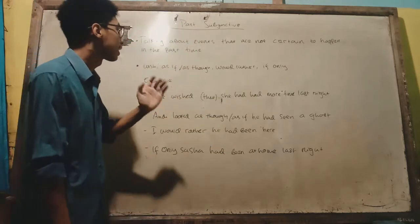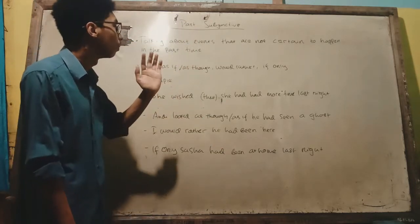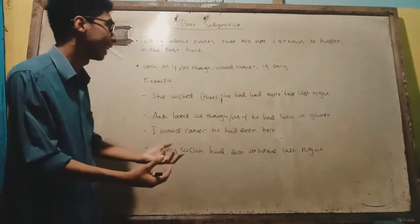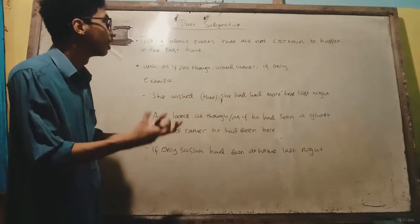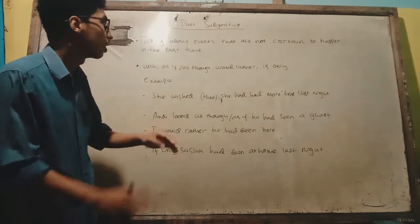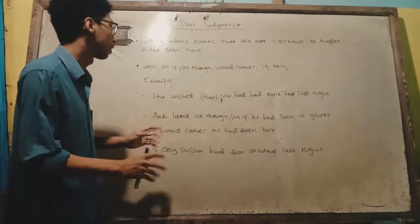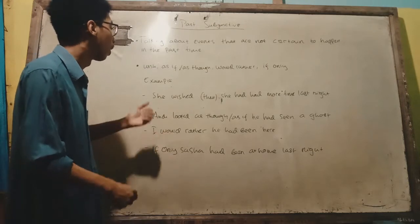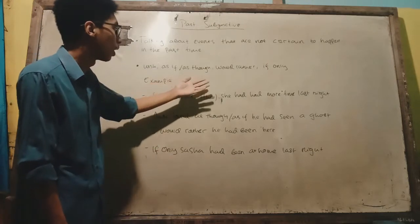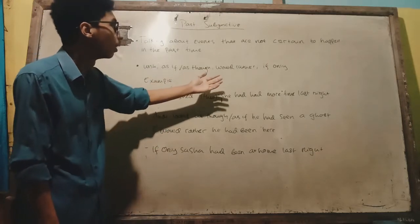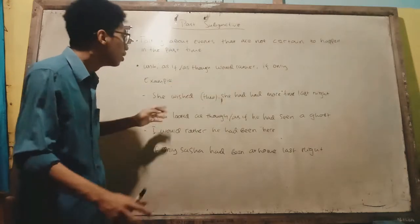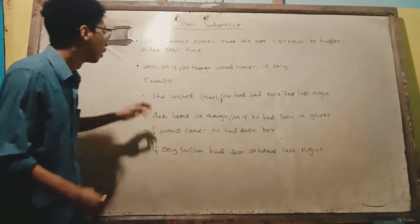Past subjunctive has five words that indicate a sentence is past subjunctive. They are: wish, as if or as though, would rather, and if only. So, let's jump to the examples.